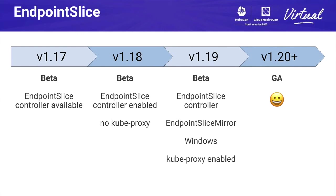What's the status of endpoint slice? In v1.17, the endpoint slice controller was beta. In v1.18, the slice controller was enabled by default but there was no kube proxy integration. In v1.19, everything is beta and everything is enabled by default. And finally, we're going to GA in v1.20. Endpoint slice is so fundamental to the operation of the system that it has taken many releases to get it right and ensure that upgrading or downgrading won't break everything.